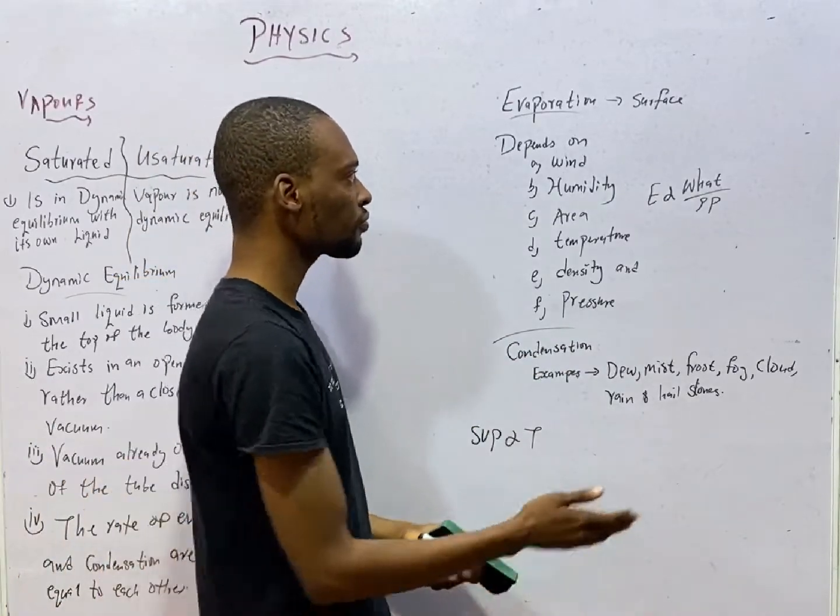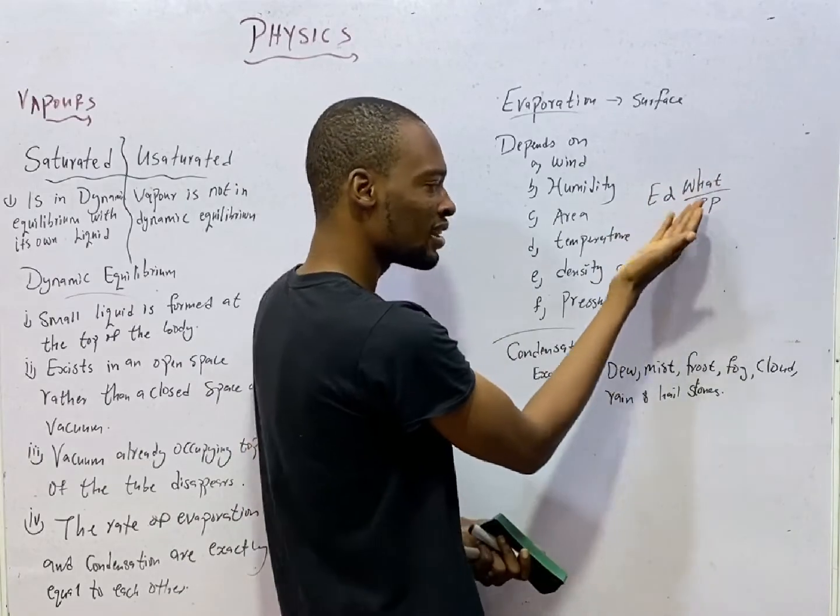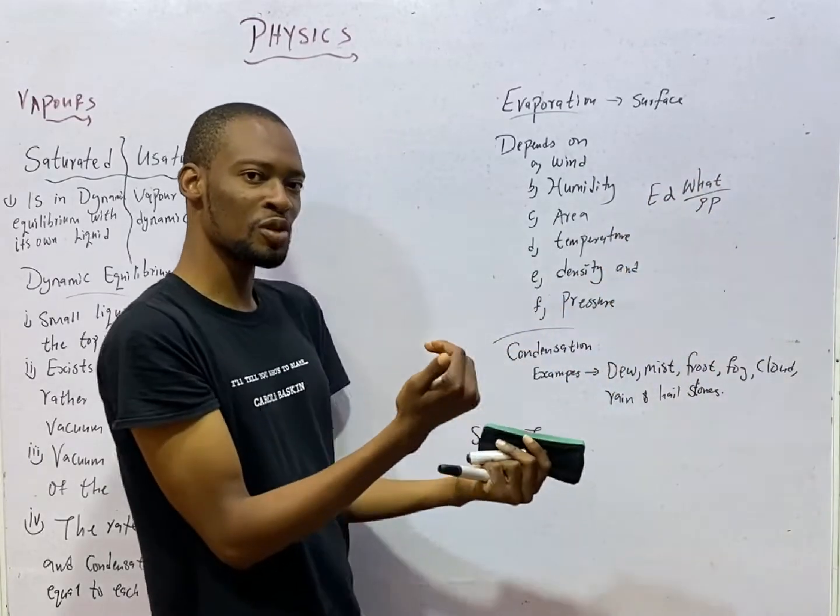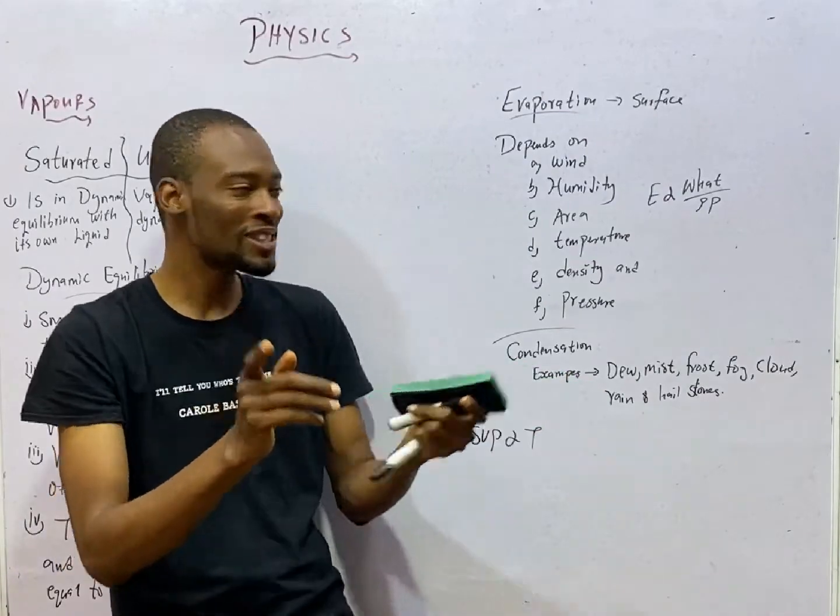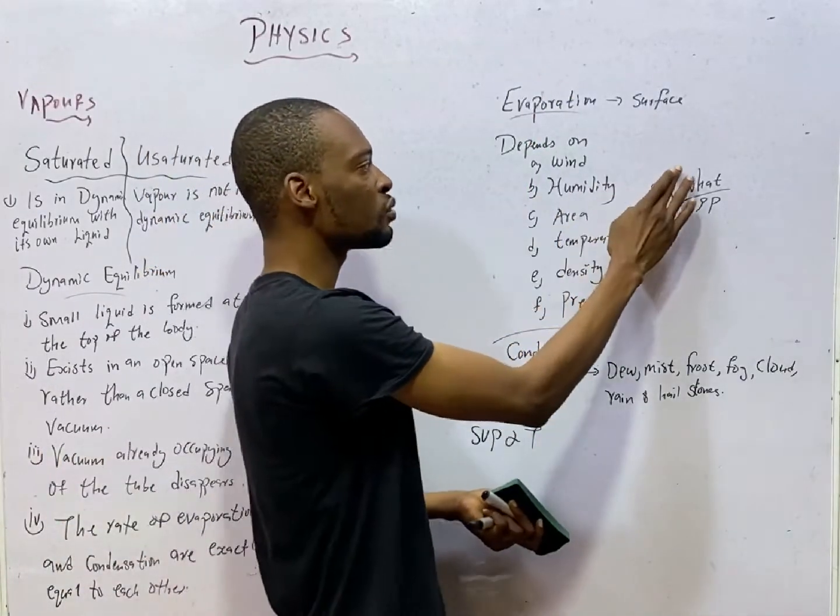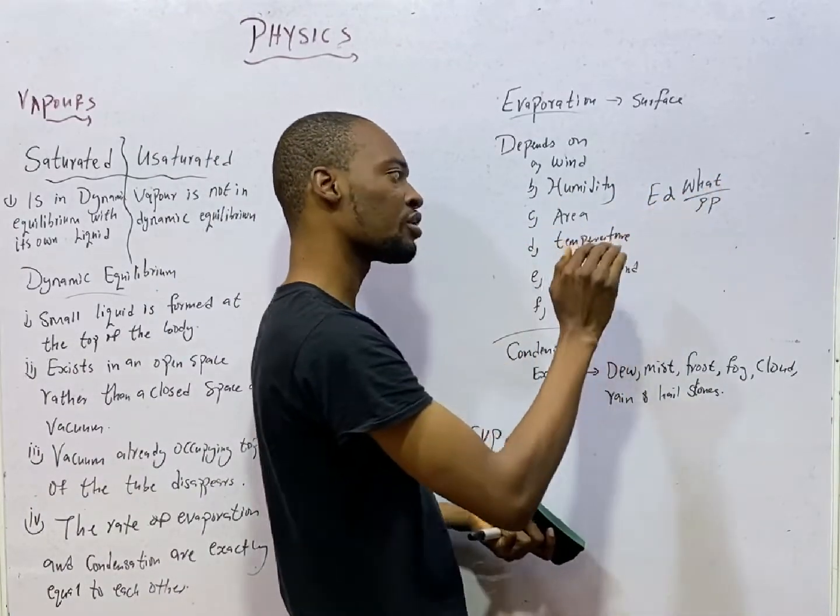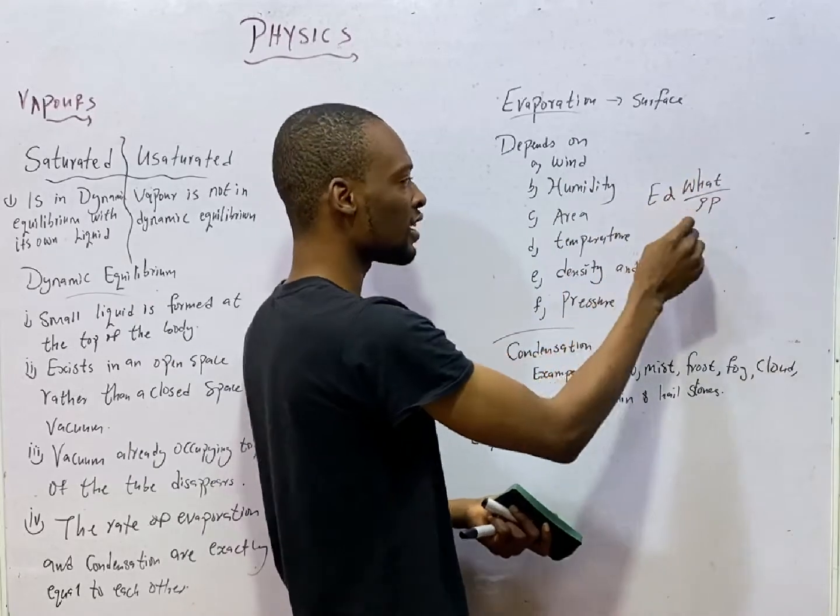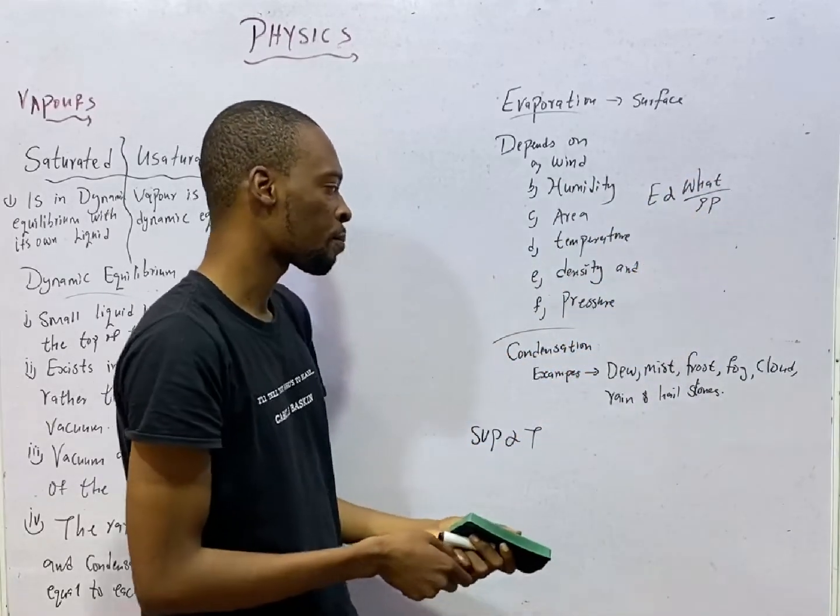This is the relationship. Evaporation is proportional to WHAT over ρP. W is wind, H is humidity, A is area, T is temperature. So WHAT all over rho, density, and pressure.